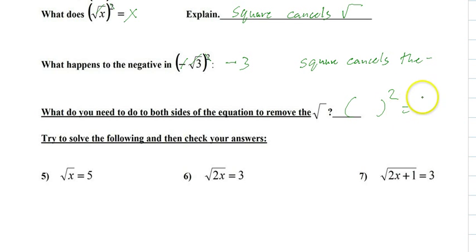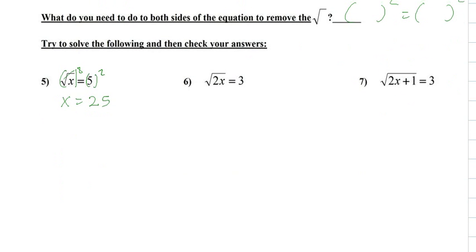Square it. If we square both sides, it will remove the radical, and we get x equals 25. You still need to check it, so come back down here and that's a check.